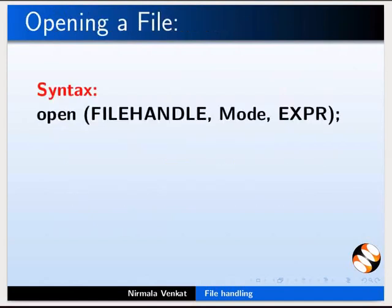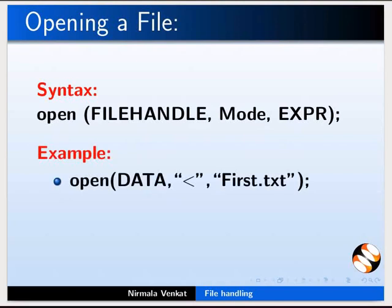This is the syntax for the open function. In the syntax, file handle is a file handle written by the open function. Mode represents a mode of opening the file — for example, read, write, etc. The expr is a physical file name used to read or write. In this case, first.txt is a file name.